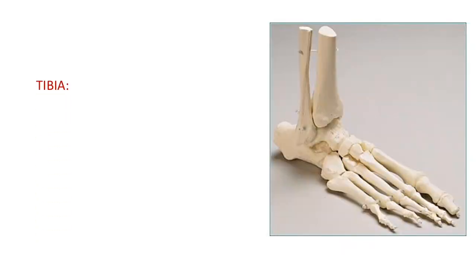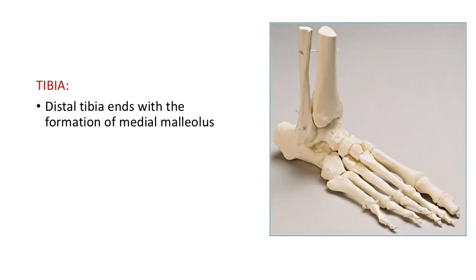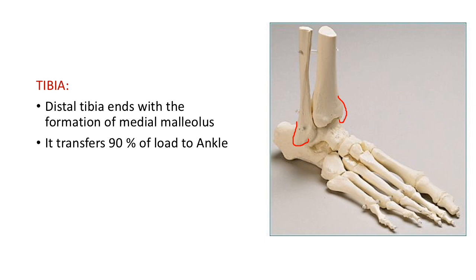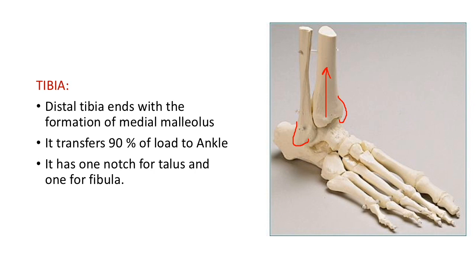The next bone is the tibia. The distal tibia ends with the formation of the medial malleolus, which is palpable on the medial side of the ankle joint. The medial malleolus transfers 90% of the load to the ankle joint, making it the primary weight-bearing bone. It has one notch for the talus and one for the fibula — on the lateral side a notch for the fibula, and on the inferior side a notch for the talus.